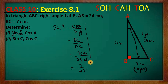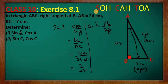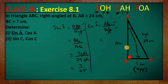Now let's find the cosine of angle A. Cosine is adjacent over hypotenuse — whereas sine is opposite over hypotenuse. The adjacent side in relation to acute angle A is side AB, because it's the side next to acute angle A that is not the hypotenuse.